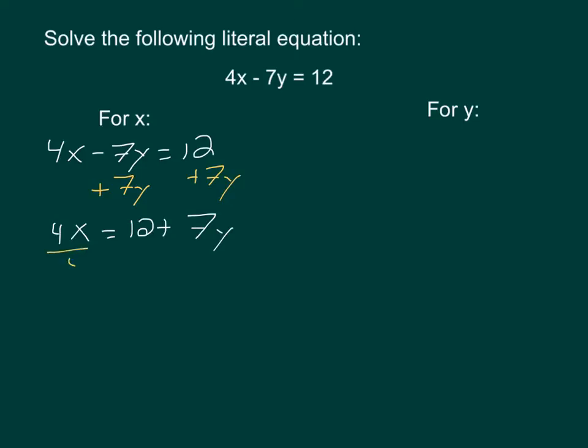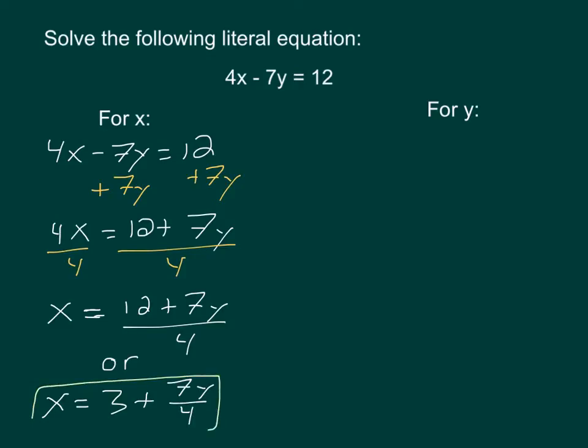That leaves me with 4x = 12 + 7y. Then I divide each side by 4. I have a couple of options: I can either leave it as (12 + 7y)/4, or divide each part by 4, which gives me x = 3 + 7y/4. Either one of these would be acceptable as my equation solved for x.